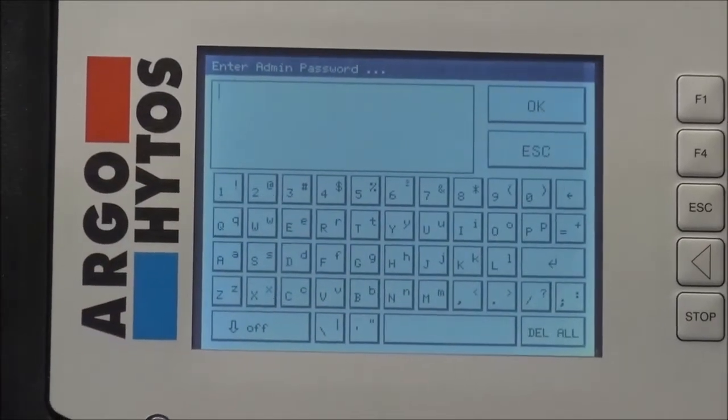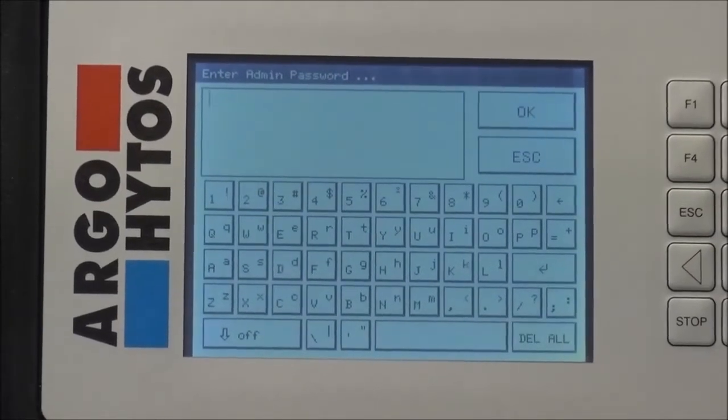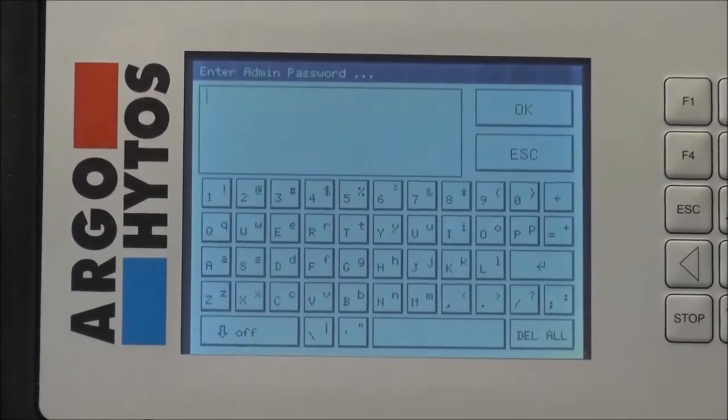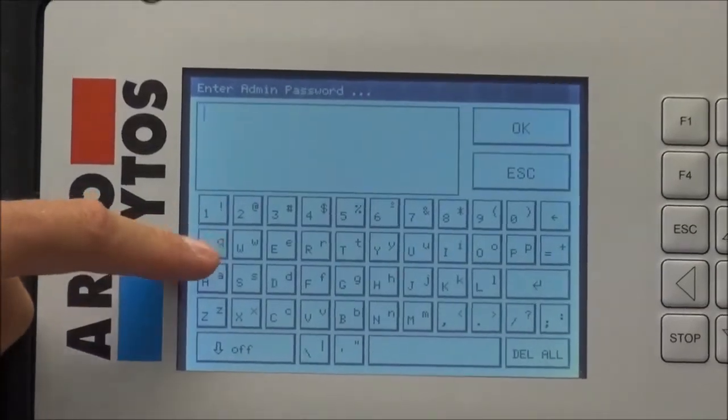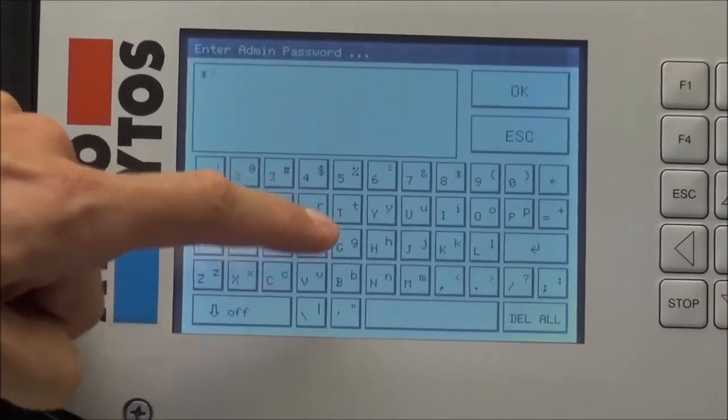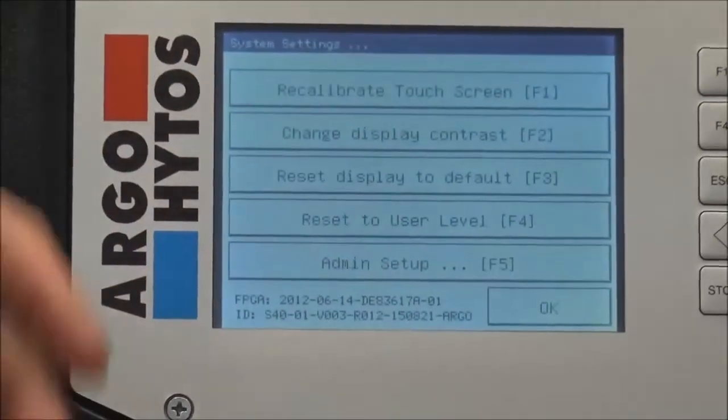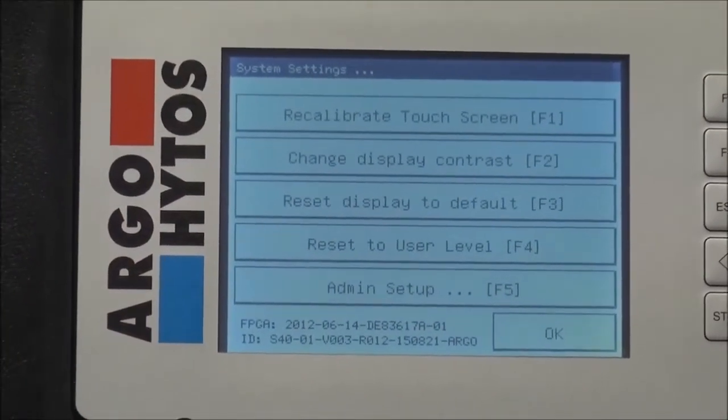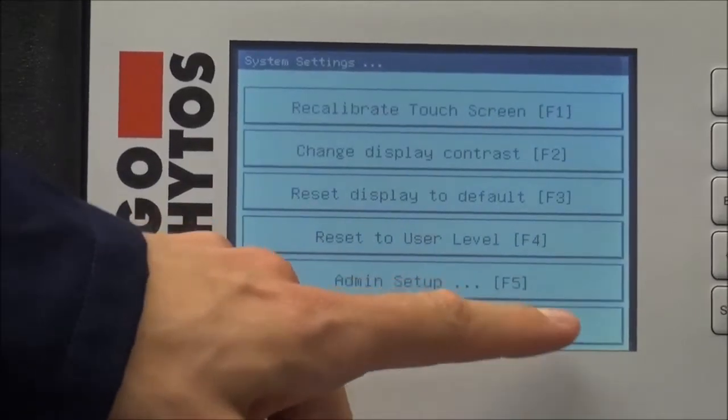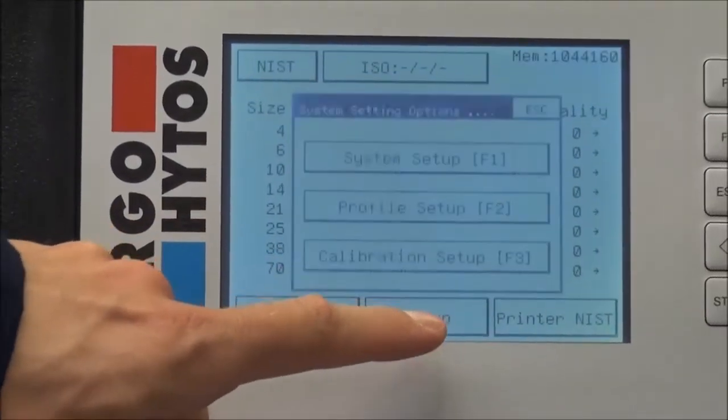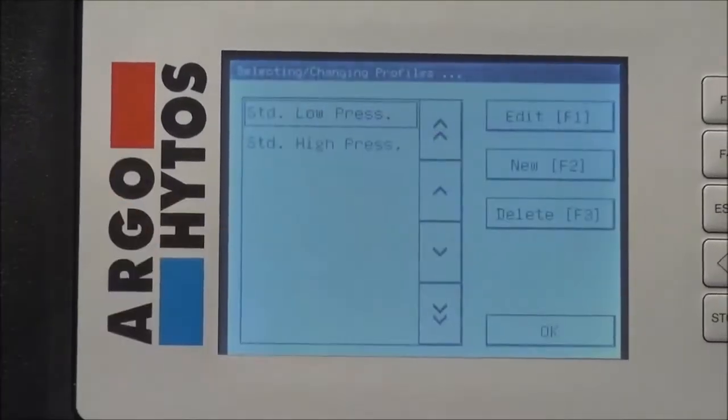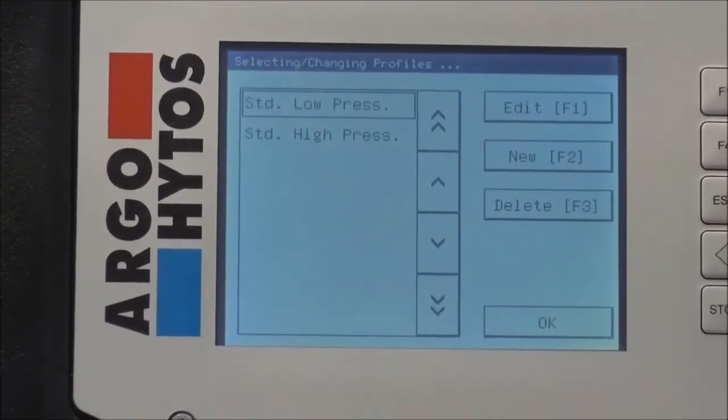That is intended to protect current settings from misuse or misoperation. The standard password is given in the manual and we just put that in and then afterwards you have full access to the settings as well as to the administrator level. So we confirm that with OK and now we go back to the profile settings and then we can choose the measurement profile.